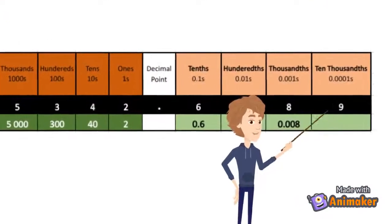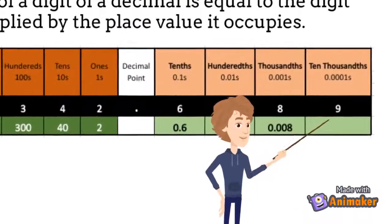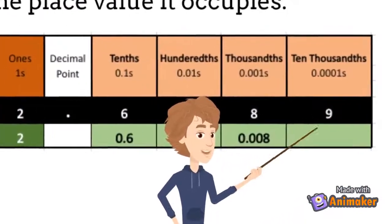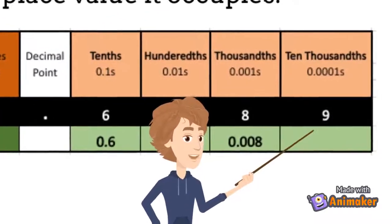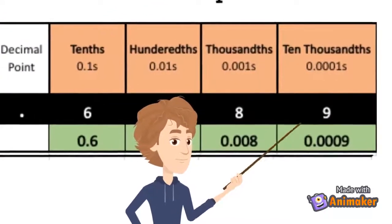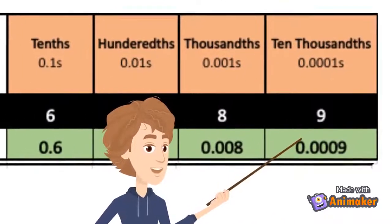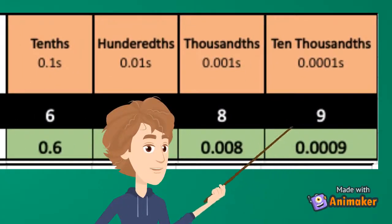The place value of 9 is ten-thousandths. So its value is 9 ten-thousandths. That is 9 times 1 ten-thousandth, or 0.0009.